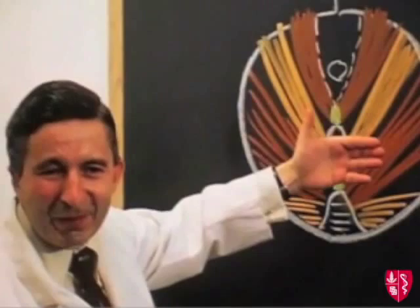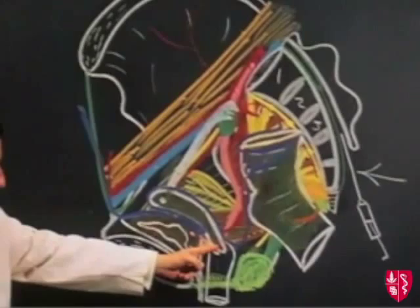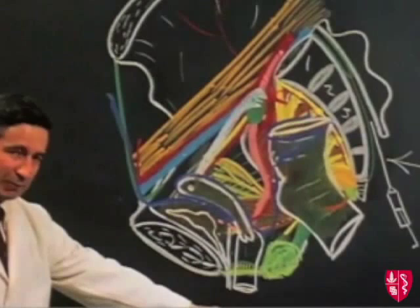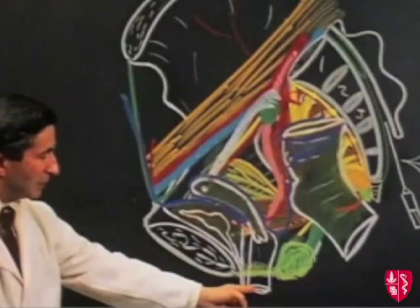Notice that the long axis of the uterus is at an angle to the long axis of the vagina. This is important clinically because if the long axis of the uterus is in line with the long axis of the vagina, there is a tendency for the uterus to descend through the vagina — a condition known as prolapse.